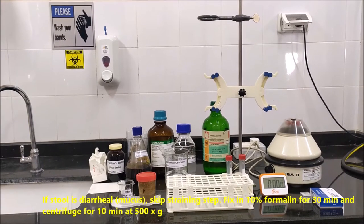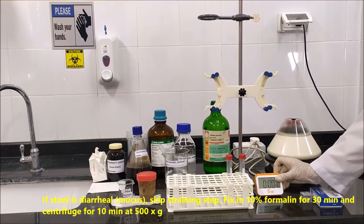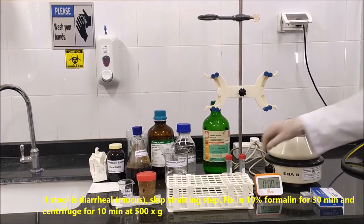If stool is diarrheal or mucoid, skip straining step. Fix in 10% formaline for 30 minutes and centrifuge for 10 minutes at 500g.